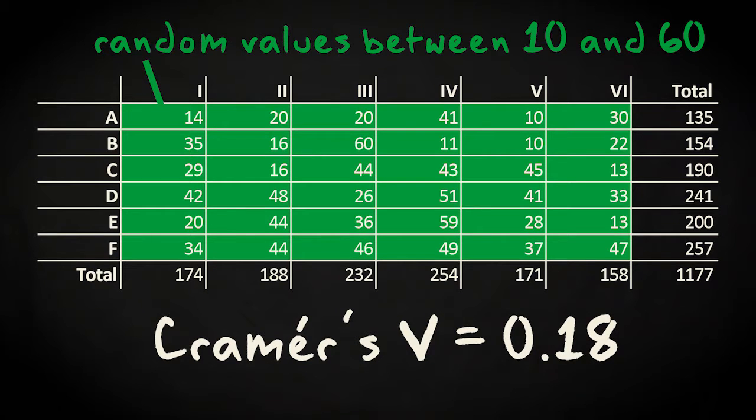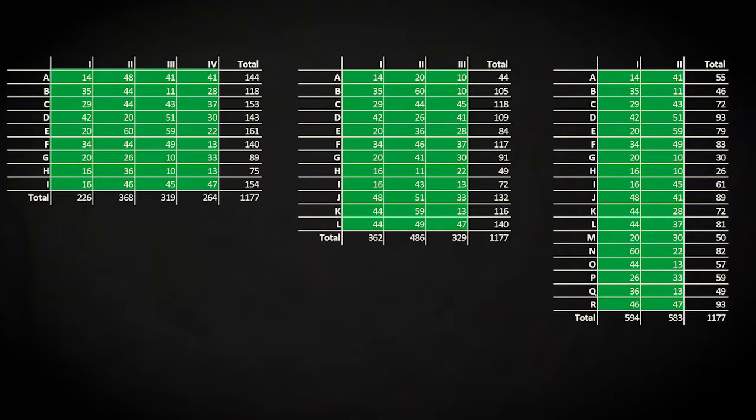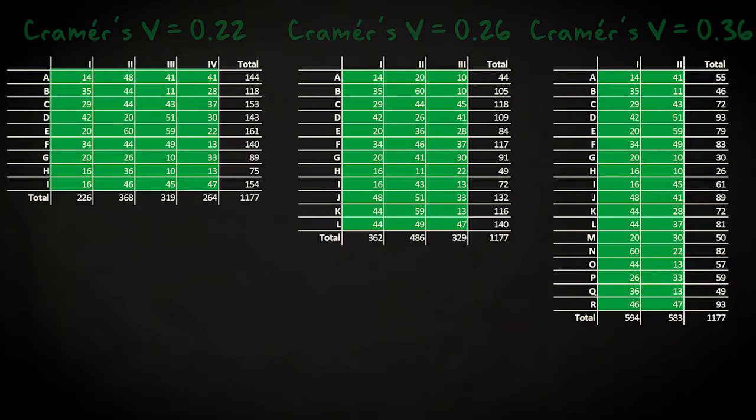Now, if we reshape the table to have respectively 4, 3 and 2 rows, the index increases up to 0.36.